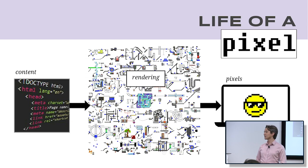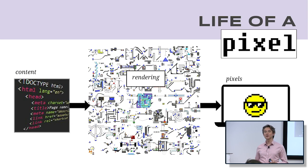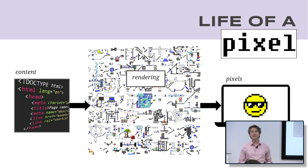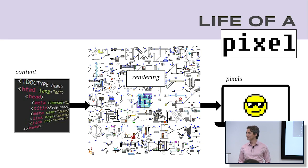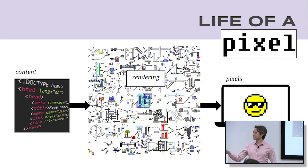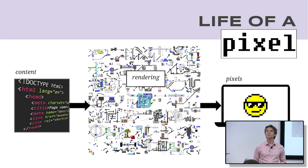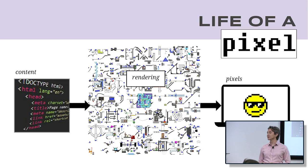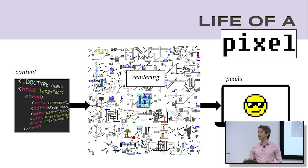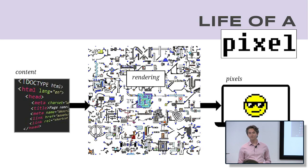This talk is about rendering, which is the process of turning content into pixels. I'm going to talk a little bit about content, then a little bit about pixels, and then we'll dive into the magic in the middle.